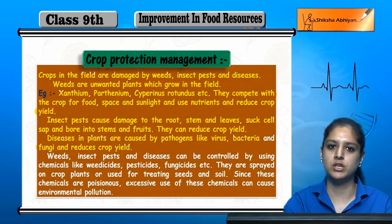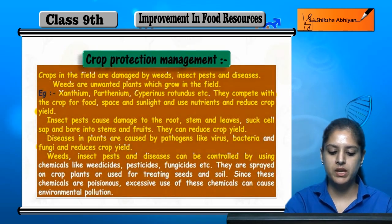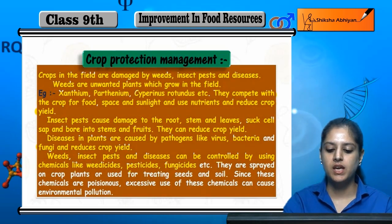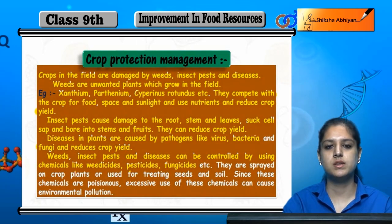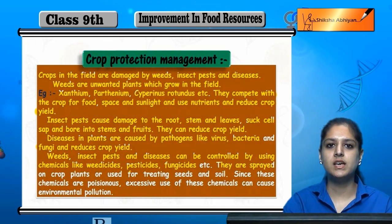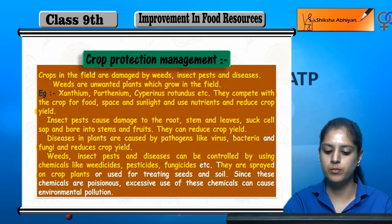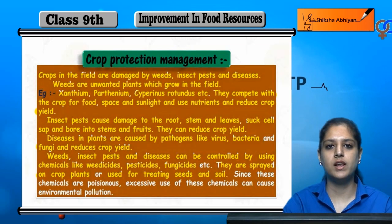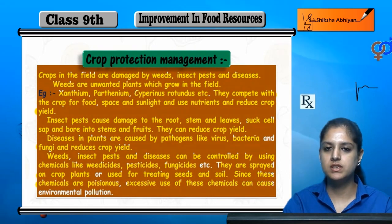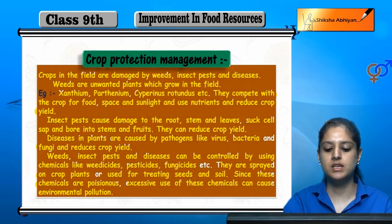Crop yields are reduced in the field by weeds, insects, pests and diseases. These can be controlled by using chemicals like weedicides, pesticides and fungicides. We use them to control and kill weeds and pests. Since these chemicals are poisonous, excessive use can cause environmental pollution.